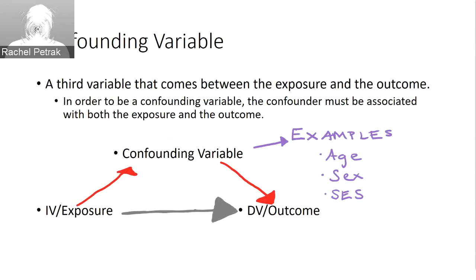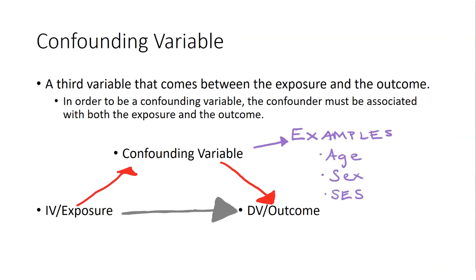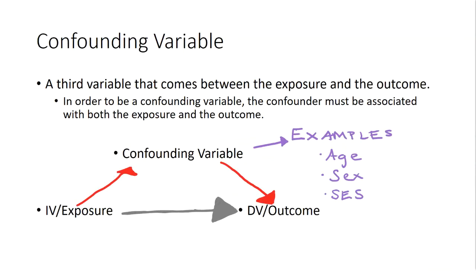Some great examples of confounding variables are age, sex, and socioeconomic status. For example, if we're interested in smoking as an exposure and health as an outcome, we'd expect that age would be associated with both the exposure to smoking and the outcome of health. Good studies put effort into controlling for these confounding variables.